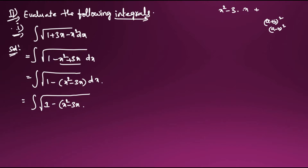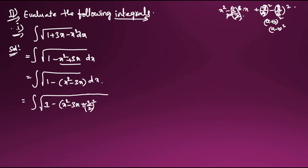We need to bring this into (a + b)² or (a - b)² form. So I will add 9/4 inside — because (3/2)² = 9/4 — and subtract it to keep the expression equal. The 3/2 goes into the whole square form, and the added and subtracted 9/4 terms cancel accordingly.